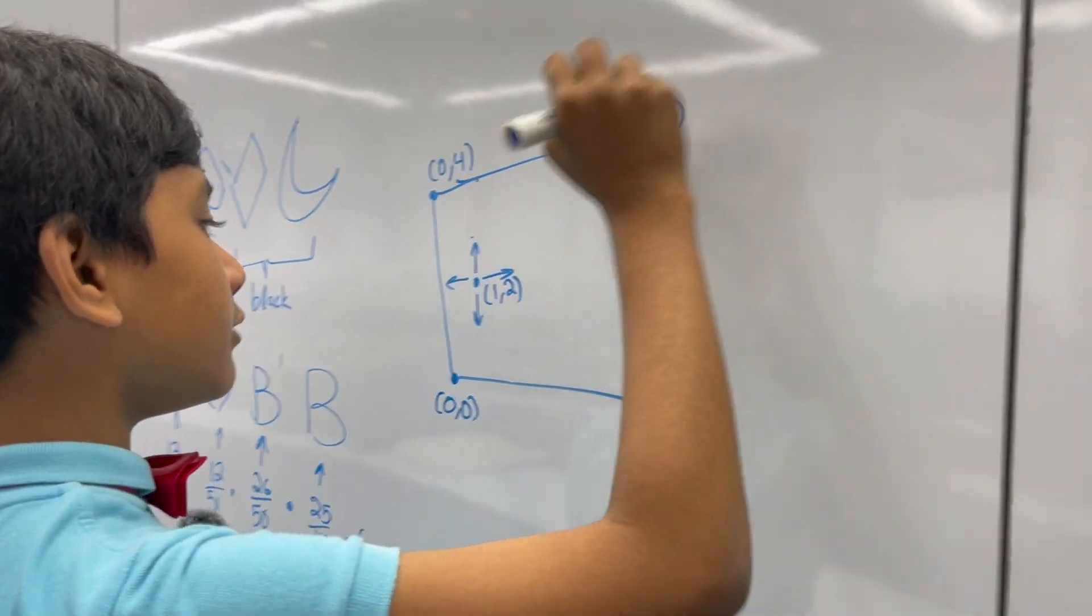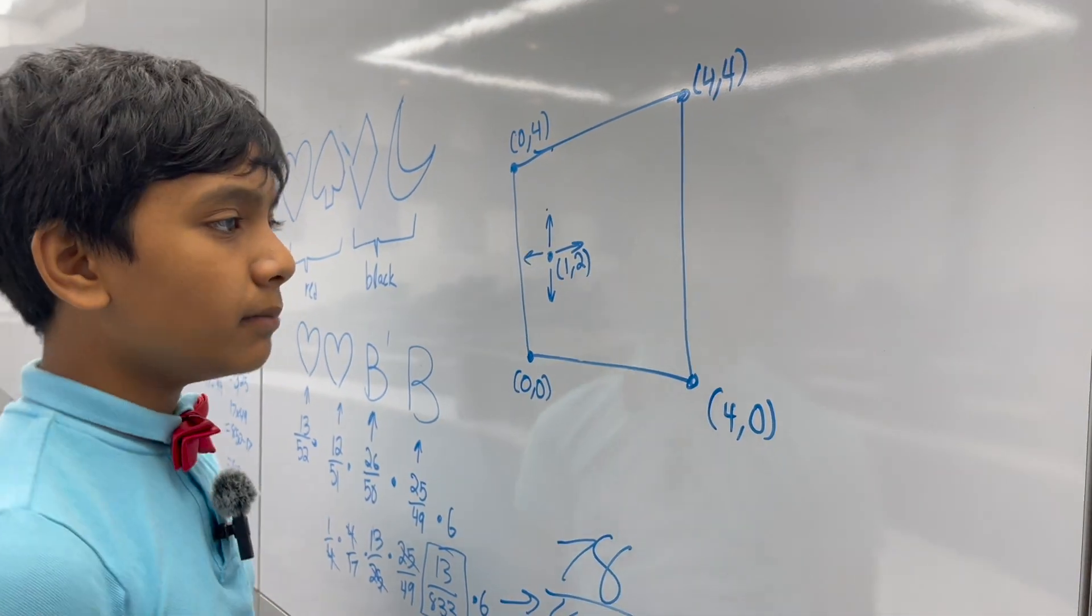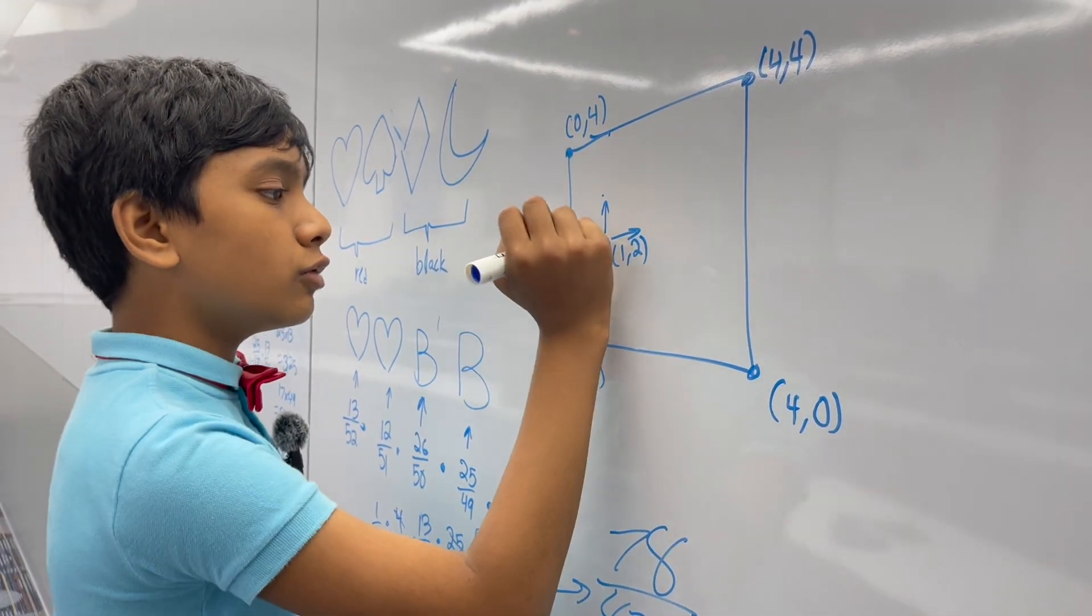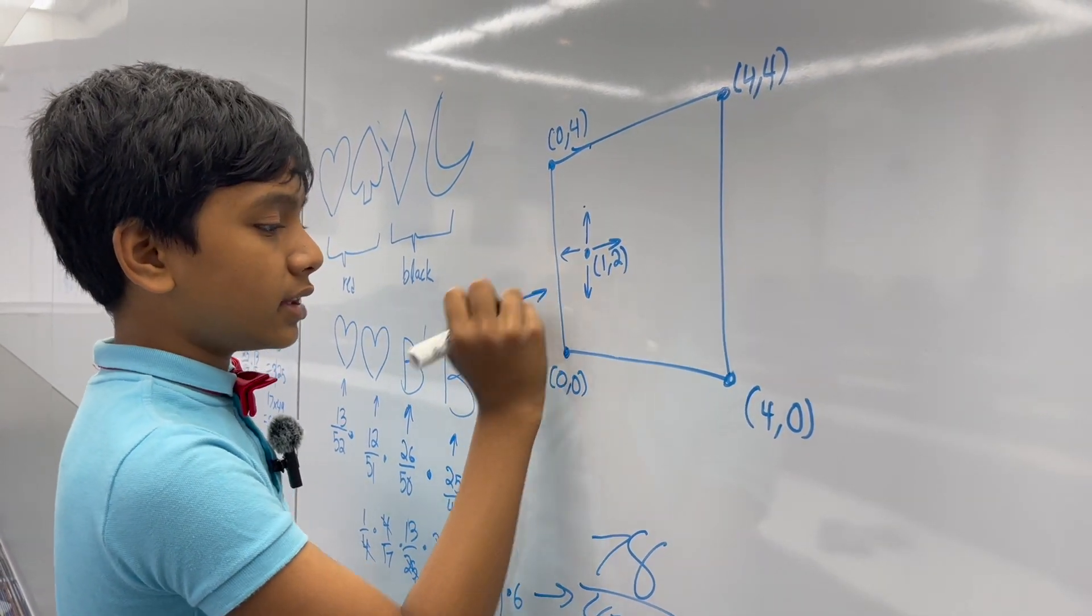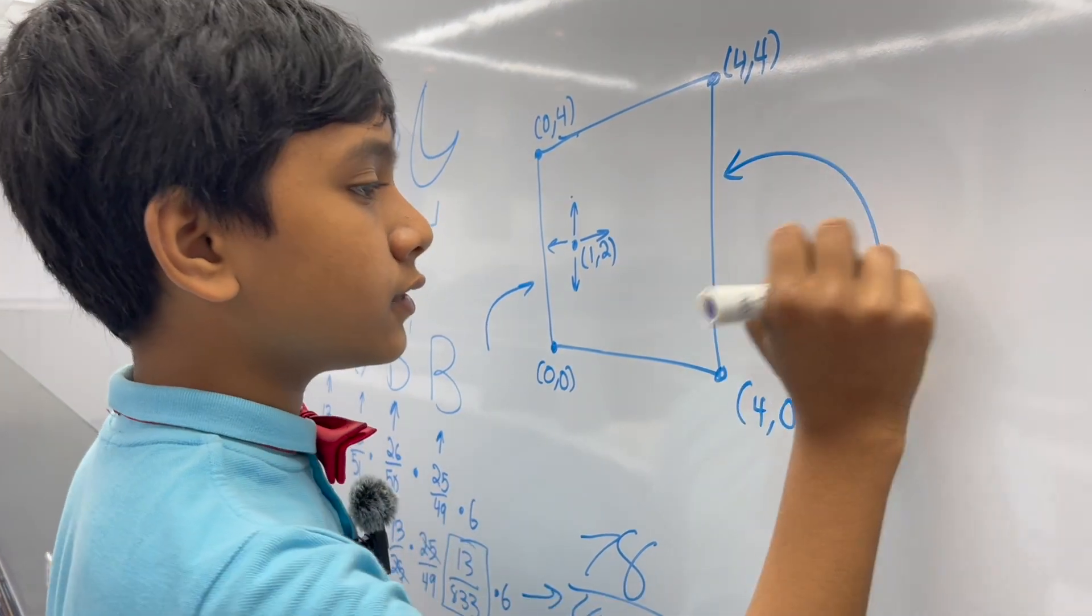So, it starts a sequence of jumps. And, its sequence of jumps ends when it hits one of the walls of the square. What is the probability that it hits either this wall of the square, or this wall of the square?